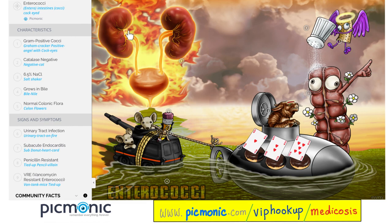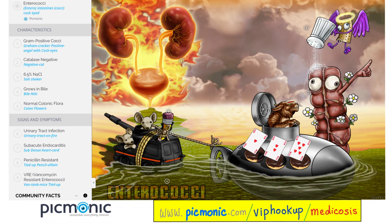Diseases caused by Enterococcus include urinary tract infections such as cystitis and pyelonephritis, subacute bacterial endocarditis, and peritonitis. Enterococci are resistant to penicillin. Many of them are also resistant to vancomycin — here's the van with mice mnemonic. Let's review in 10 seconds: Enterococcus is a gram-positive coccus, catalase negative, grows in salt and bile, can cause UTIs, peritonitis, and endocarditis, resistant to penicillin, and many are resistant to vancomycin.